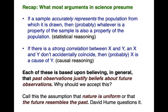This is what most arguments in science presume. In blue, I have two assumptions — one frequently used in statistical reasoning, the other in causal reasoning — but they are never explicitly stated, only presumed. If a sample accurately represents the population from which it is drawn, then probably whatever is a property of that sample is also a property of the population. If there is a strong correlation between x and y, and x and y don't accidentally coincide, then probably x is a cause of y.